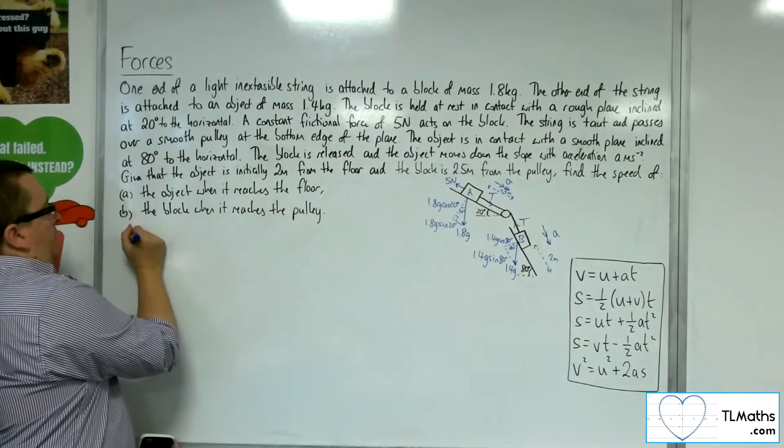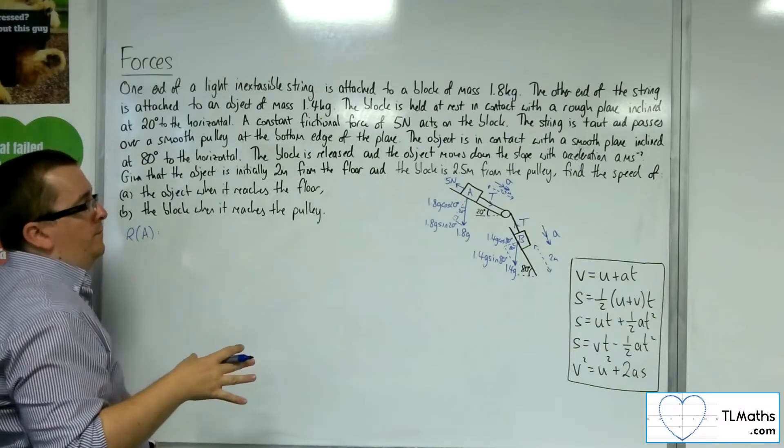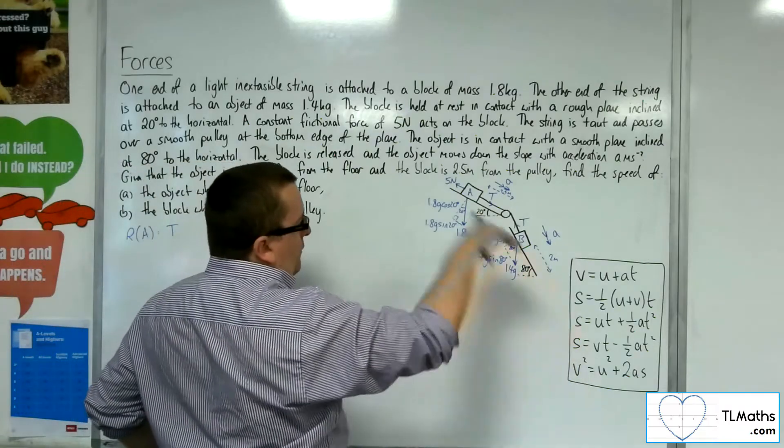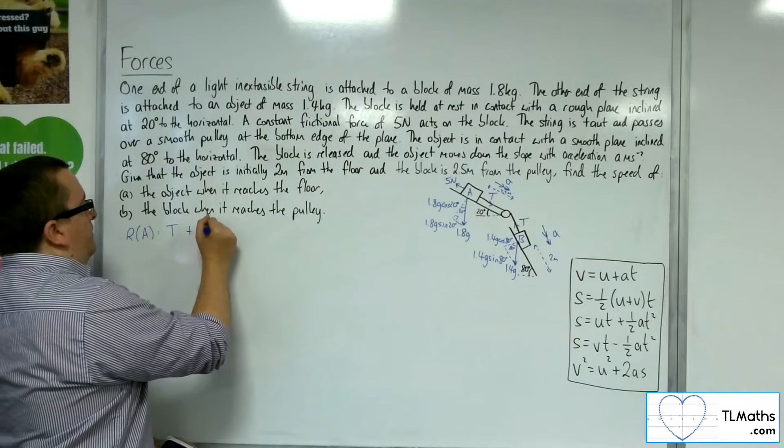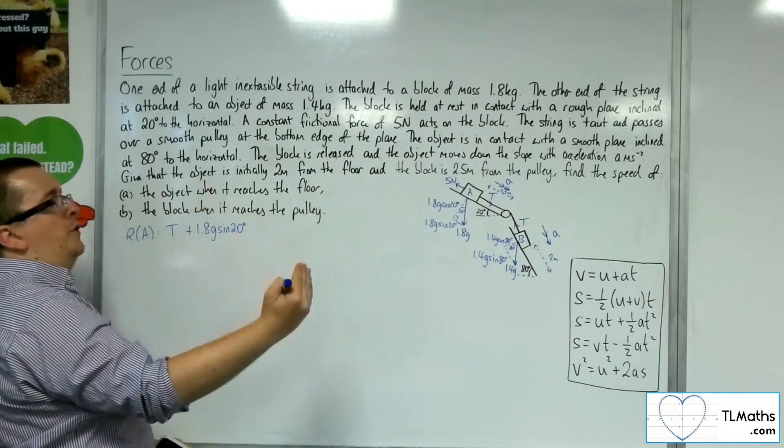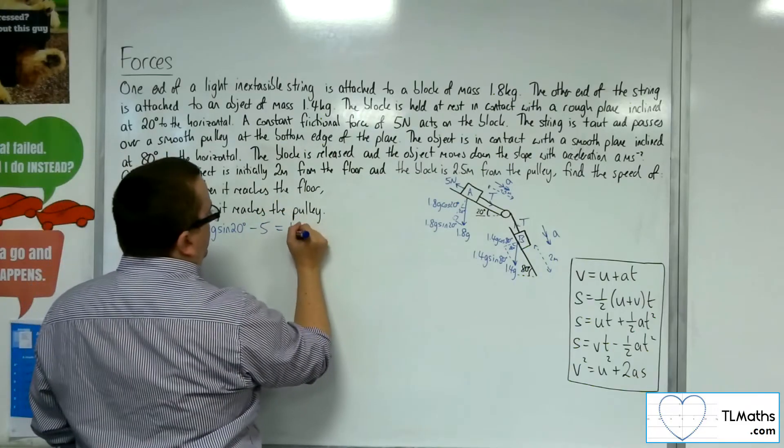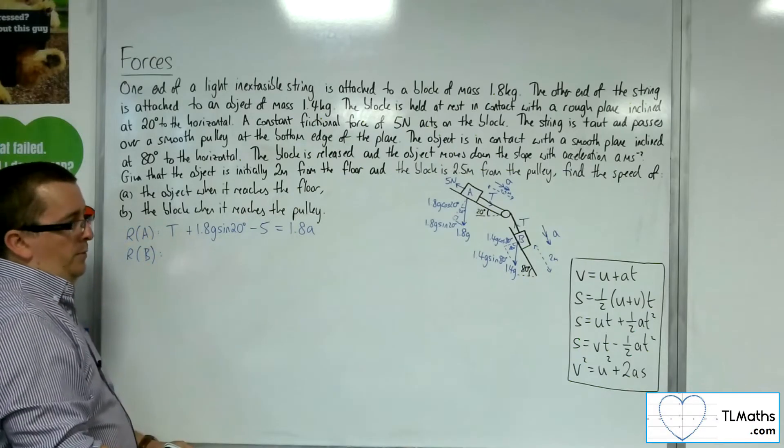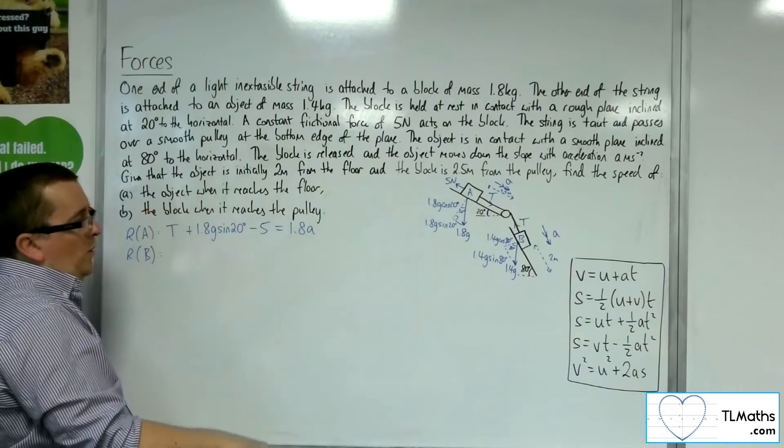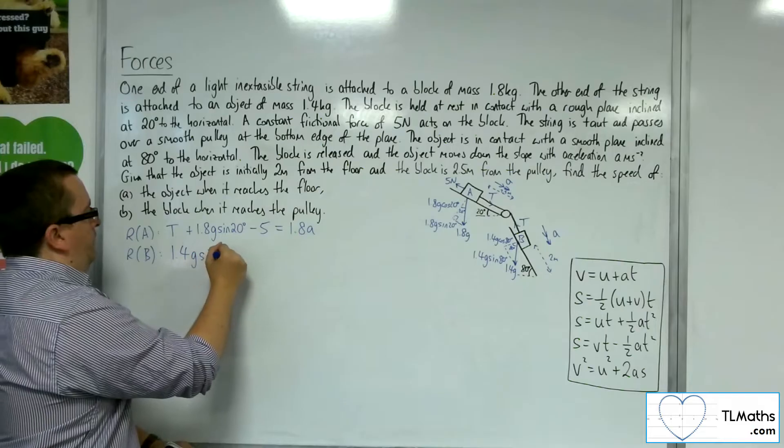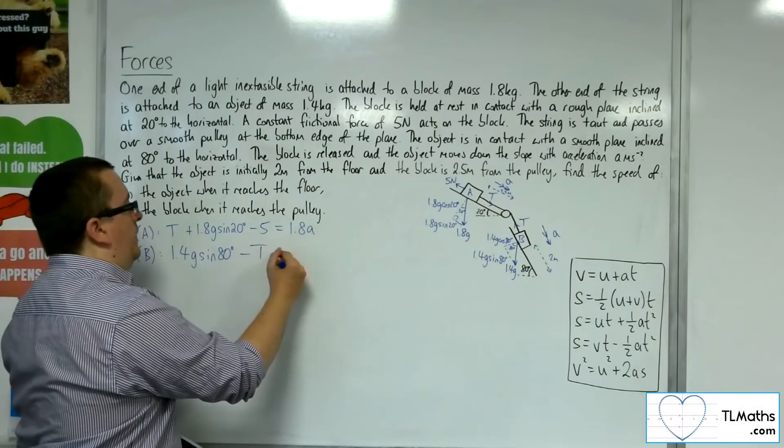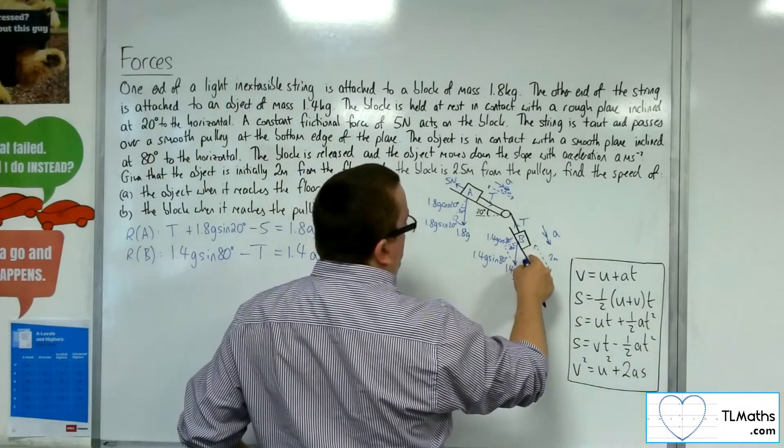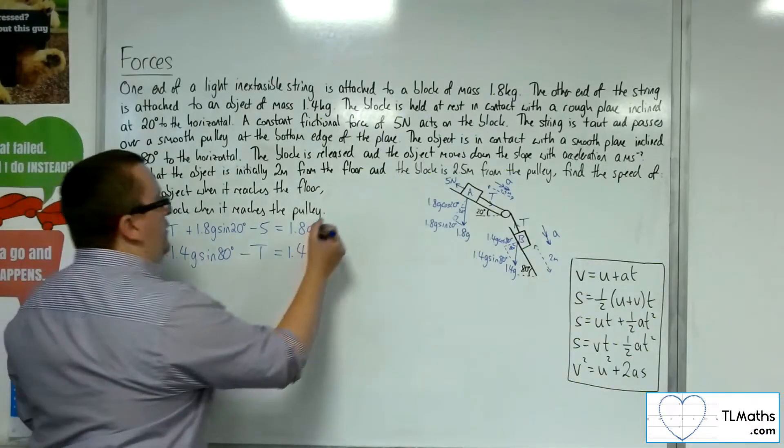I'm going to resolve particle A parallel to the plane in the direction of motion. We've got the tension working down the slope, the weight working down the slope 1.8g sin 20, and the frictional force 5 newtons working against me. That equals mass times acceleration. For particle B, resolving down the slope: I've got the weight working downwards 1.4g sin 80, tension working against me, equals mass times acceleration. There's no frictional force because that plane is smooth.